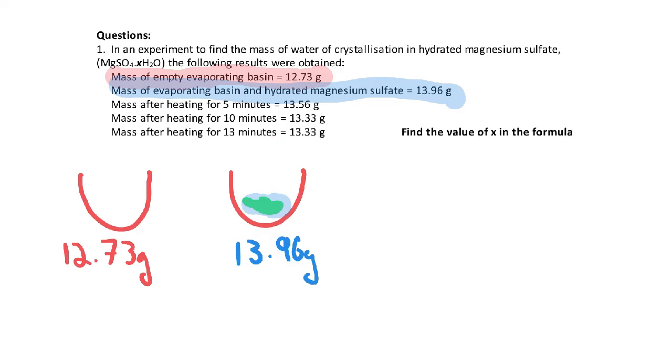But what is that mass? Well, that mass is my evaporating basin and my magnesium sulfate, because all my water is now evaporated away. So that in total means that I have a mass of 13.33 grams. So to get my mass of my anhydrous magnesium sulfate, so I want just the green, I would have to take away the mass of the evaporating basin. But I have the mass of the evaporating basin here, so that's okay.